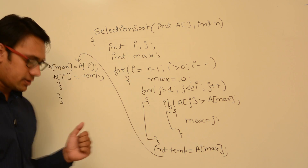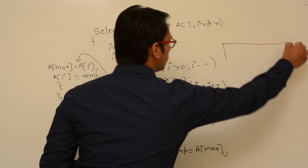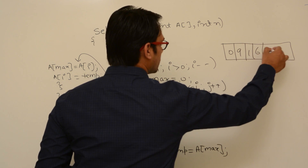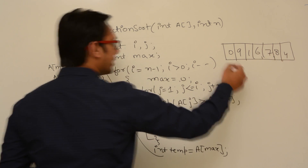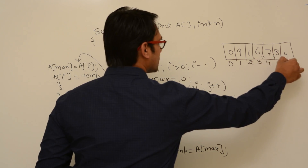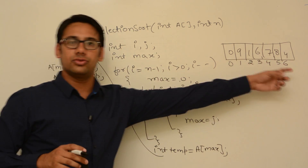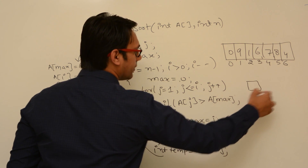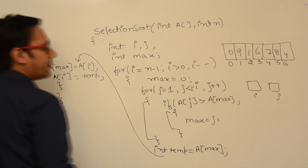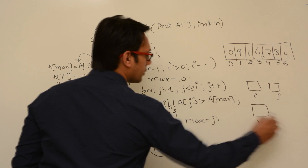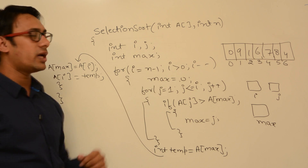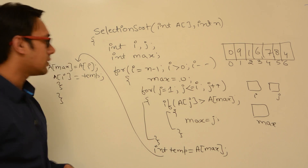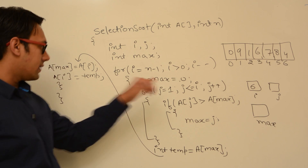Assume this is the array with data: 0, 9, 1, 6, 7, 8, and 4. The index locations are 0, 1, 2, 3, 4, 5, and 6. We have two variables i and j, and a variable max. We set i equal to n minus 1. The total number of elements are 7, so i is going to store 6.